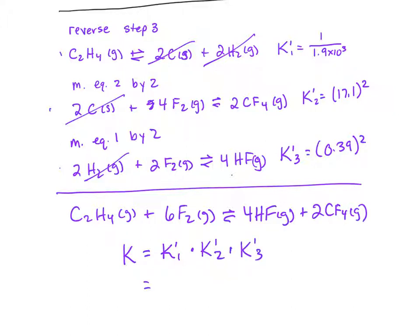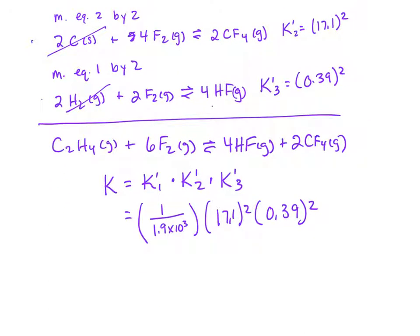Okay, so that's 1 over 1.9 times 10 to the third times 17.1 squared times 0.39 squared. And that equals 0.025. That's our new K.